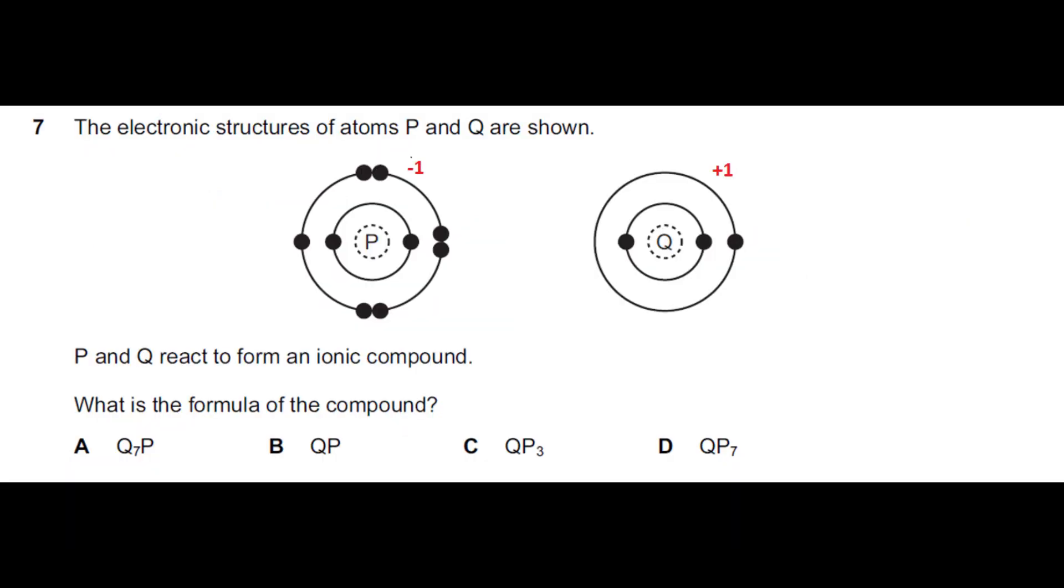The first question says electronic structure of atom P and Q are shown. For your understanding I have written the charges on them. As you see, in P we have 7 electrons so it will need 1 electron to complete its octet, gaining a minus 1 valency.